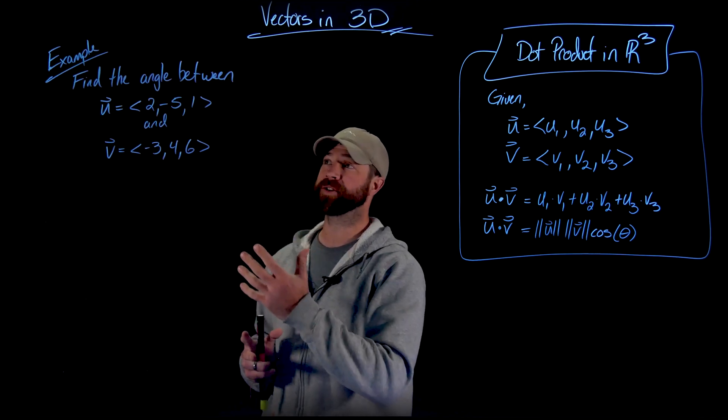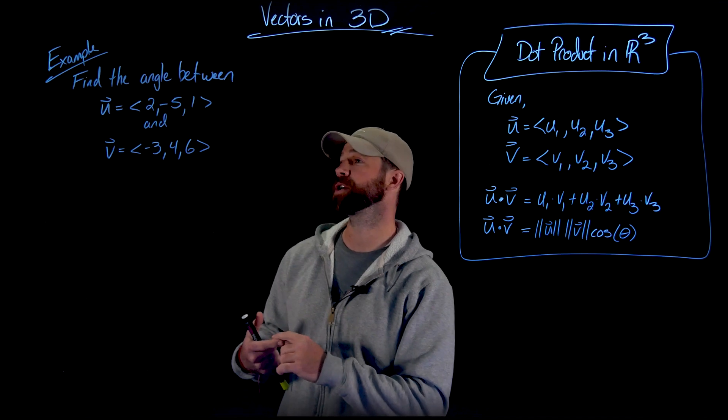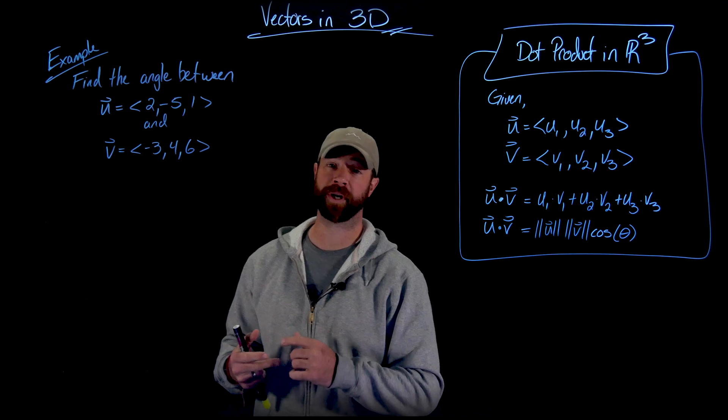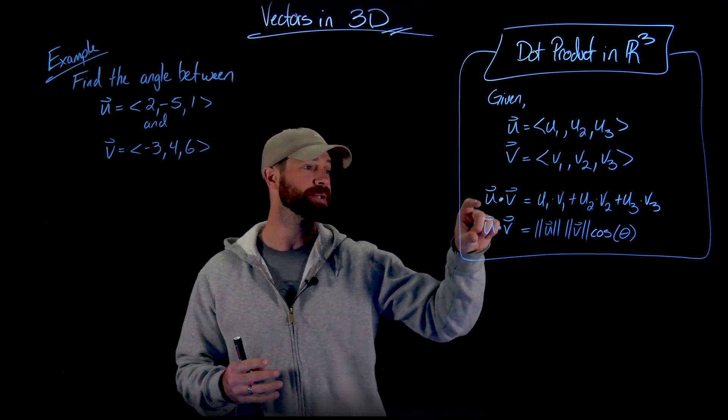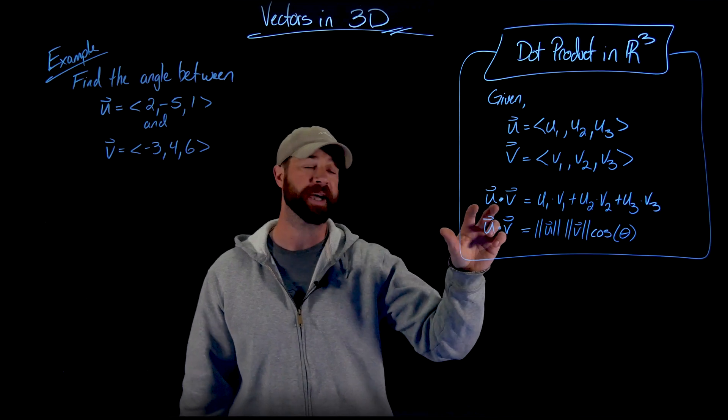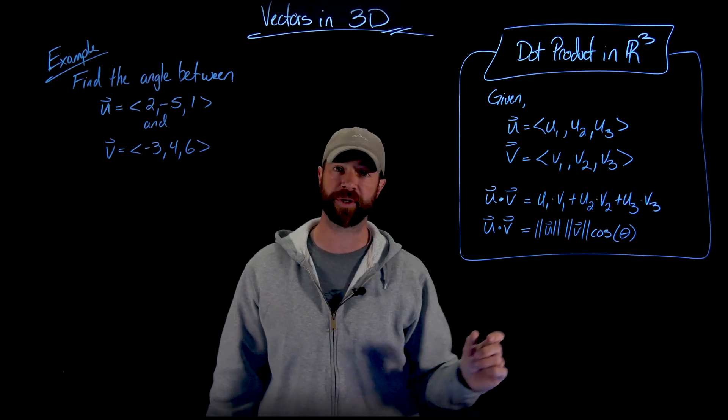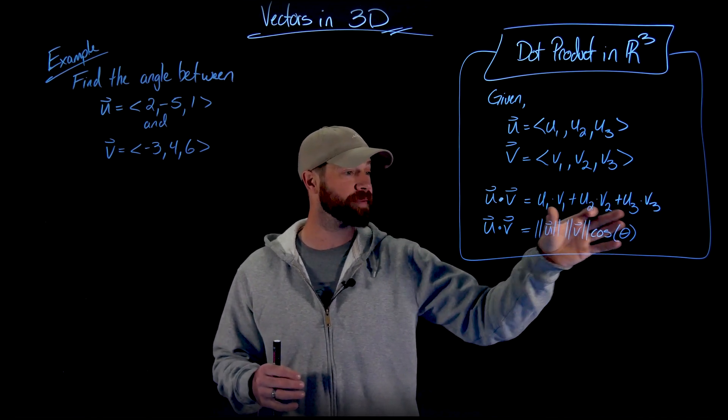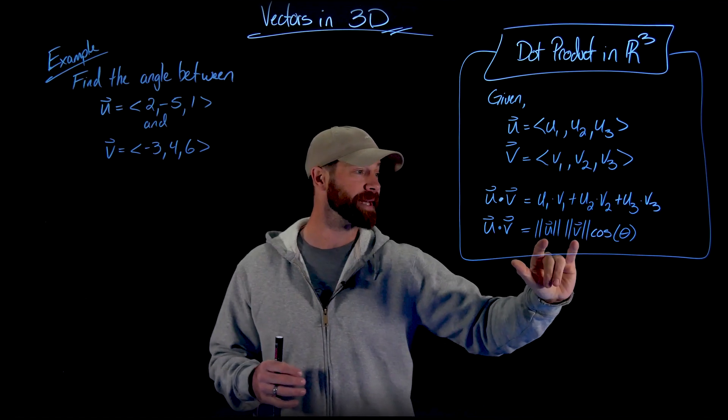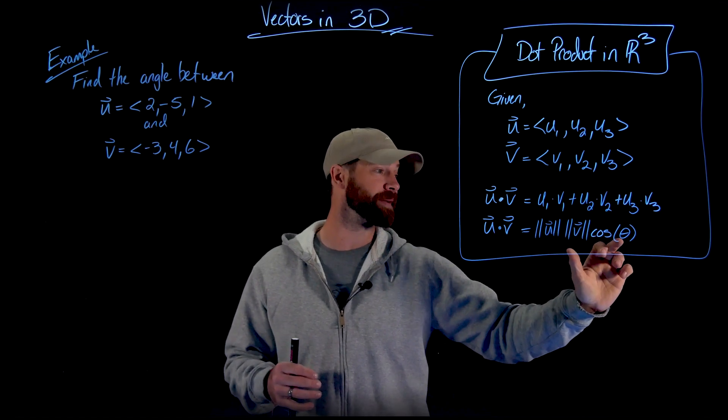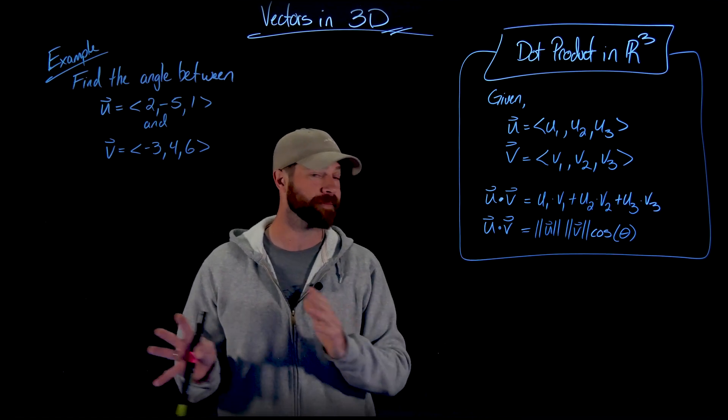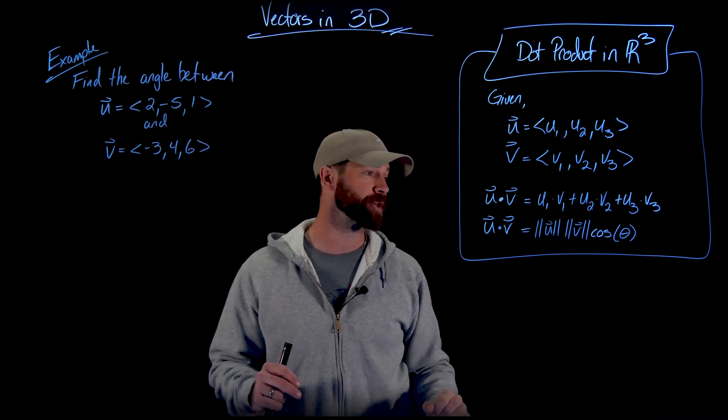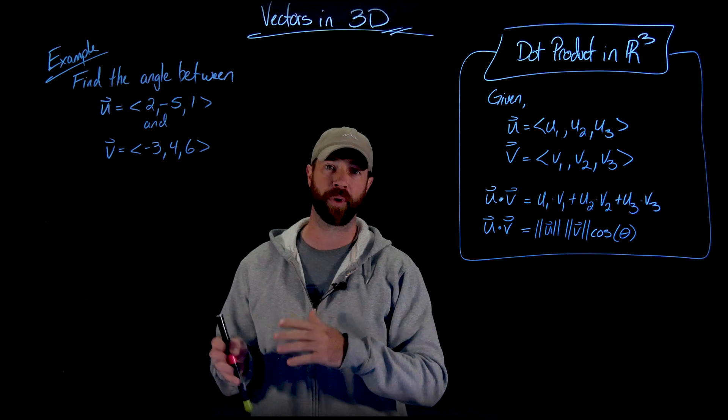In our first example, what we're being asked to do is find the angle between u, which is <2, -5, 1>, and v, which is <-3, 4, 6>. What we're going to do to find this angle is use these two definitions together. We're first going to define the dot product using this component form definition right here, which will be super simple to compute. Then we're going to set the value of that equal to this statement, where we know that the magnitudes times the cosine of that angle equals that dot product. So the first work I'm going to do is evaluate the dot product, and then I'm going to find the magnitude of both of these vectors.